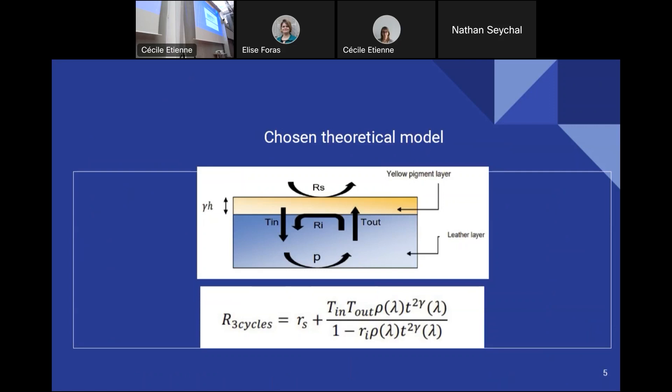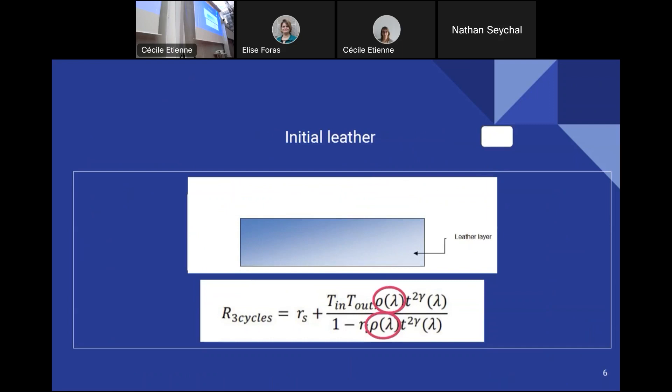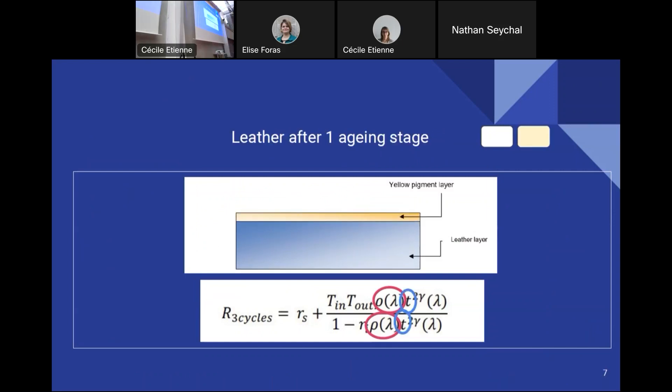And the measurements of our samples with the leather which had been into no aging cycle, so when it's not yellow at all, allowed us to find what the rho was. Then the measurements on the samples which went into one aging cycle, so when it's just a bit yellow, allowed us to get the value of T.